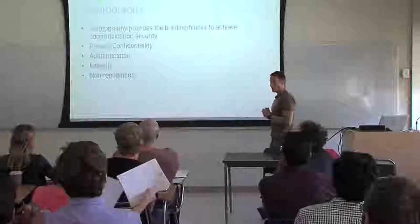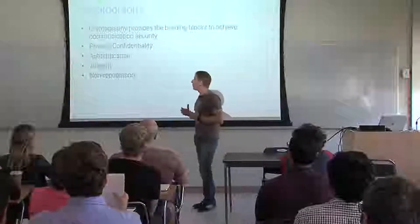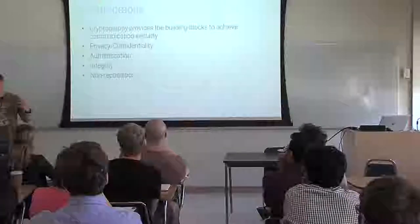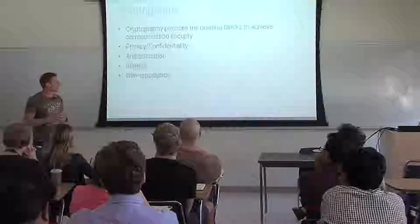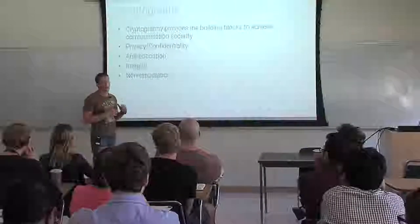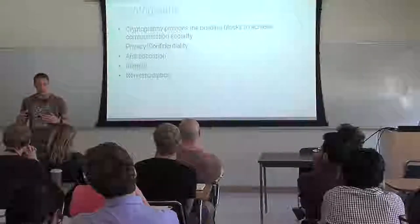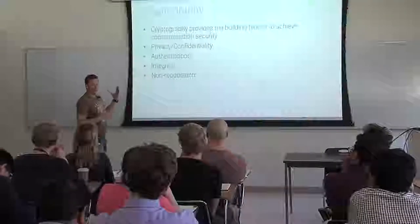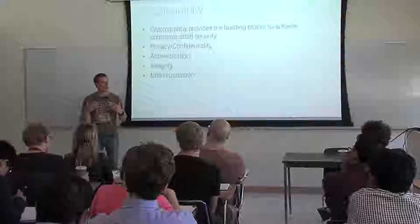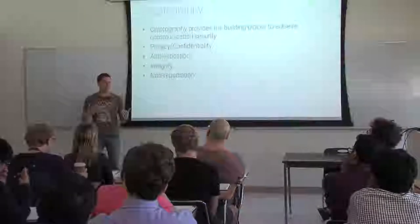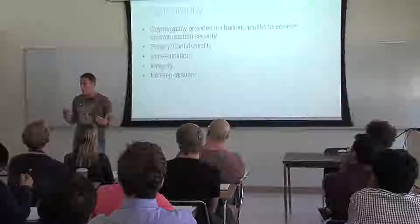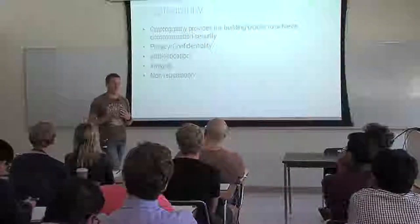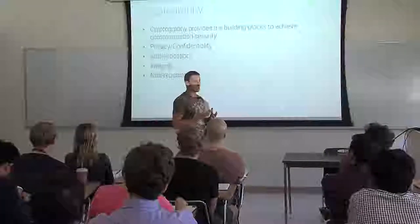Crypto provides us fundamentally the building blocks to achieve security — communication security. You can have various properties of the communication: you can have privacy and confidentiality, so you want to make sure that nobody can access the information unless they are the intended person. You can have authentication, which means you want to make sure that the person sending you a message is actually the person who claims to be the sender. You want integrity so that no modification to the messages can be performed without being detected.